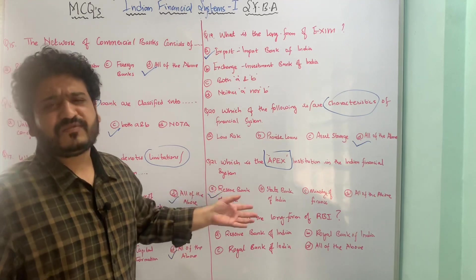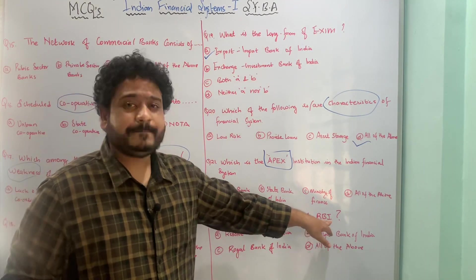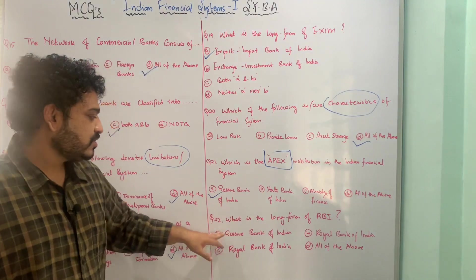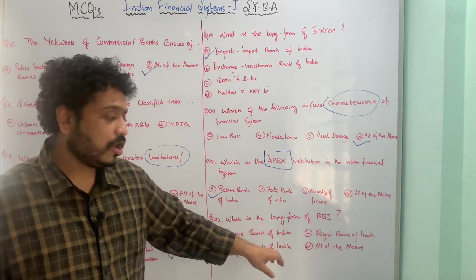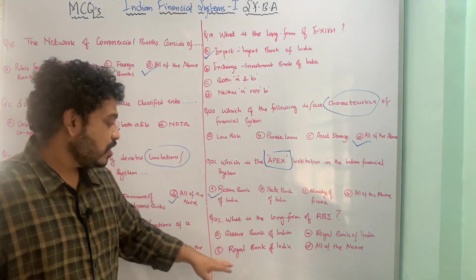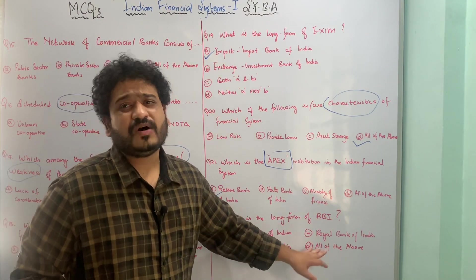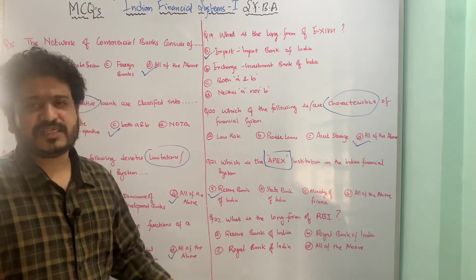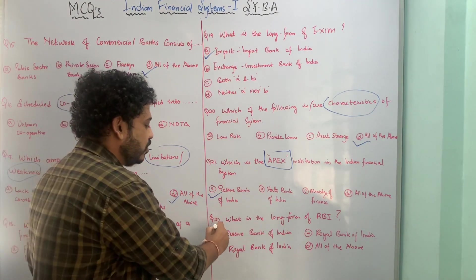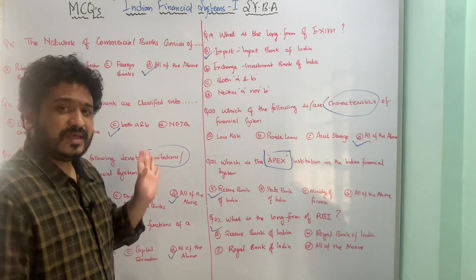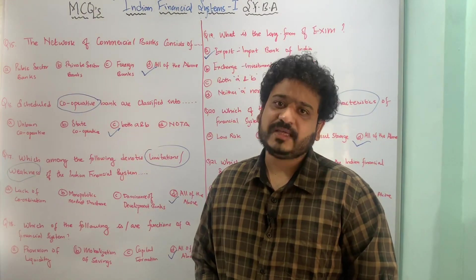The last MCQ asks for the long form of RBI. The options are: A — Reserve Bank of India, B — Royal Bank of India, C — Regal Bank of India, and D — all of the above. This is an easy question — the long form of RBI is Reserve Bank of India, option A. I hope these MCQ questions are clear. Please stay tuned for more. Thank you.